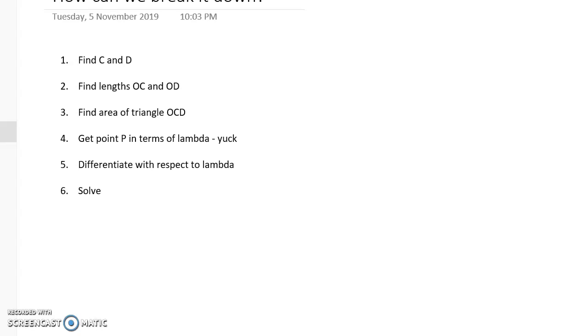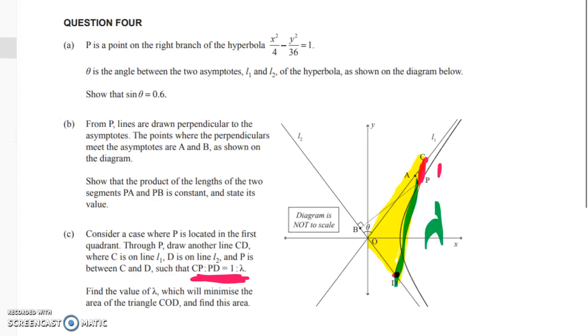Well, we need to find points C and D. We've got some point P so we can just call that point P x₀, y₀. So let's just start off by doing that. P has got some values x₀ and y₀. We also know that P is on the hyperbola, but we don't need to use that till quite late in the question.